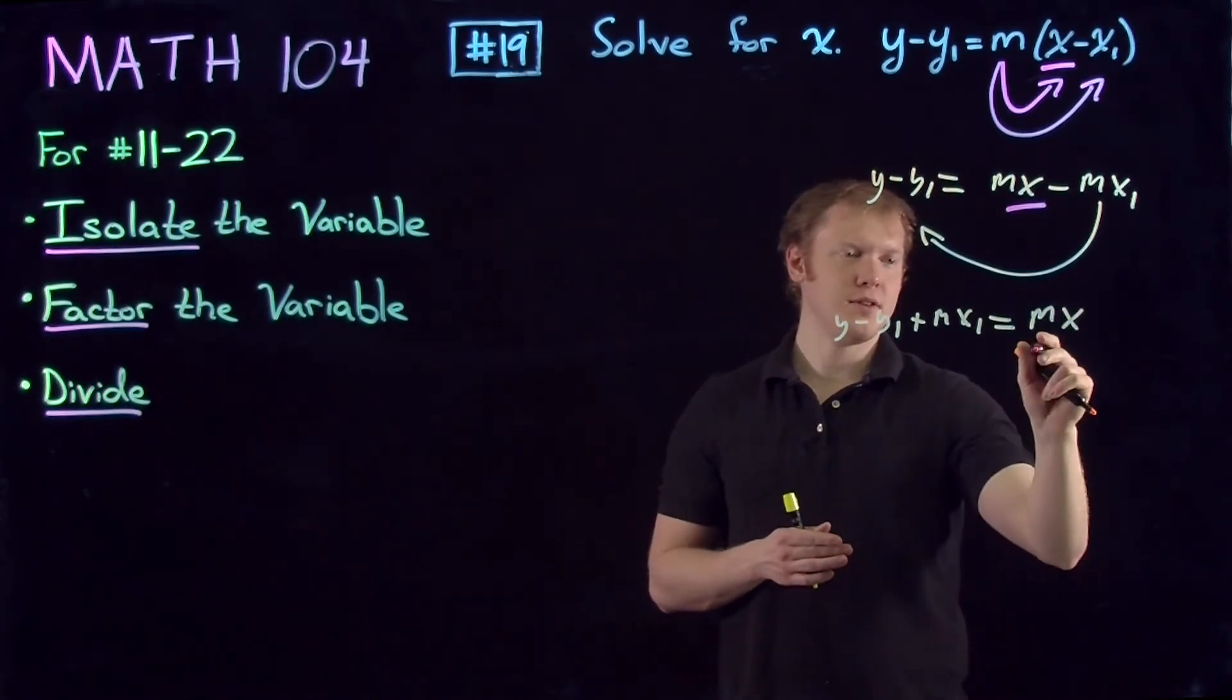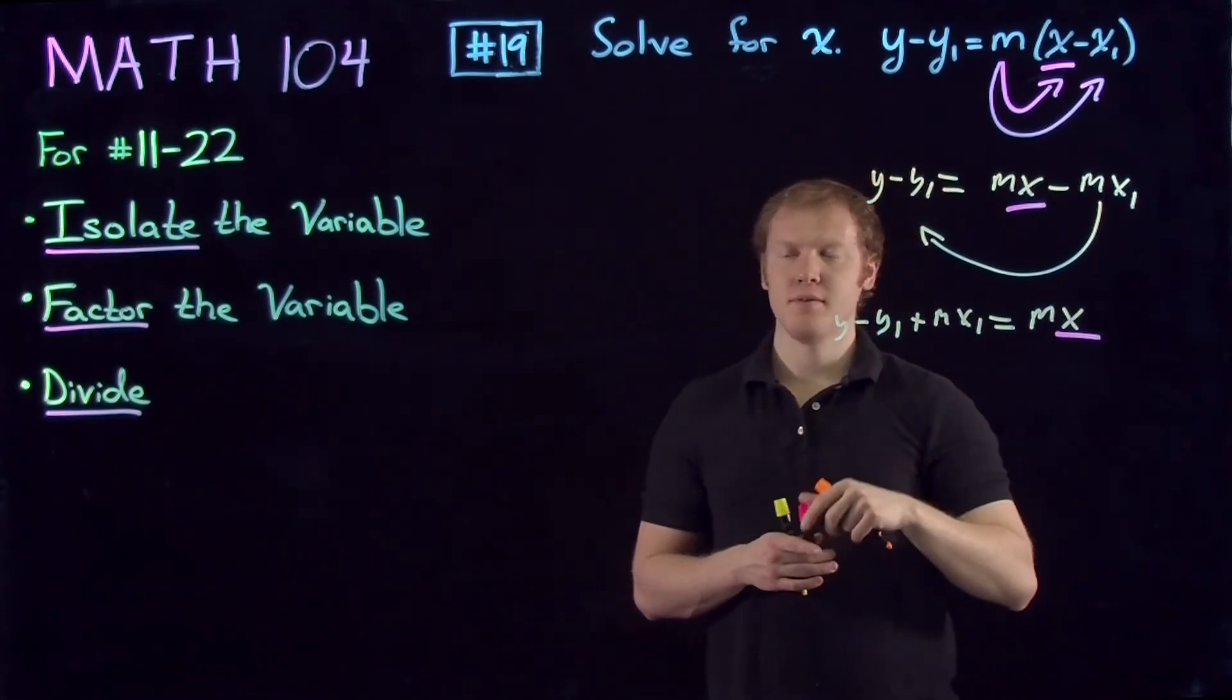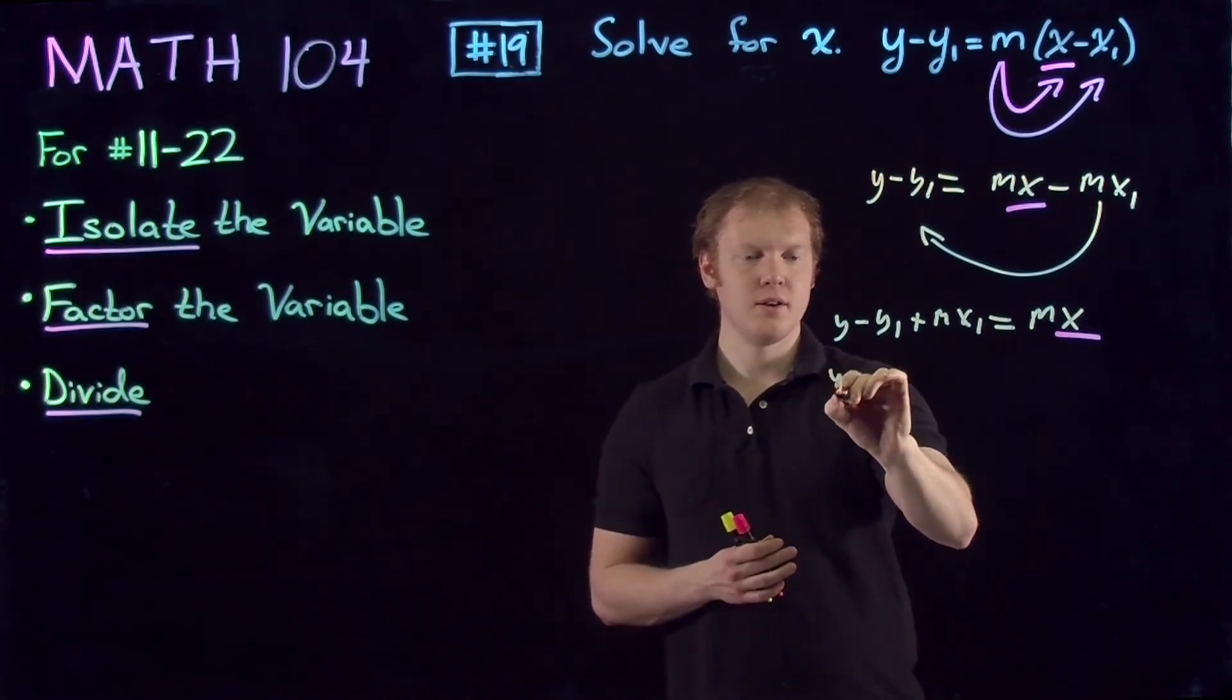Now we are almost done. We just have our factor m here to isolate for x, which we shall do by dividing.